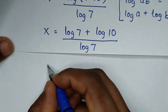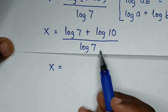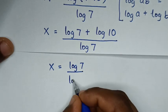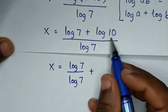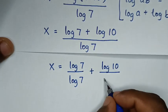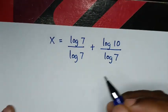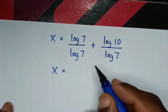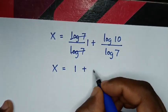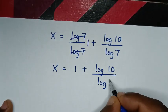Then in the next step, it will be x is equal to, we'll divide by log of 7 in both terms. So it will be log of 7 over log of 7 plus log of 10 over log of 7. Log of 7 divided by log of 7 is 1, so it will be 1 plus log of 10 over log of 7.